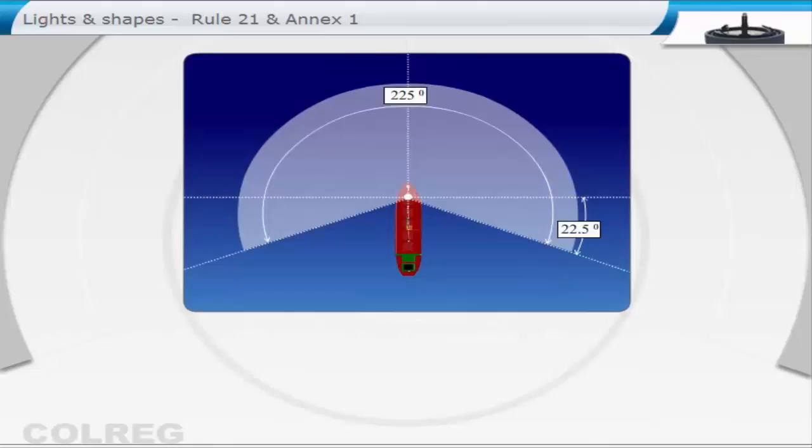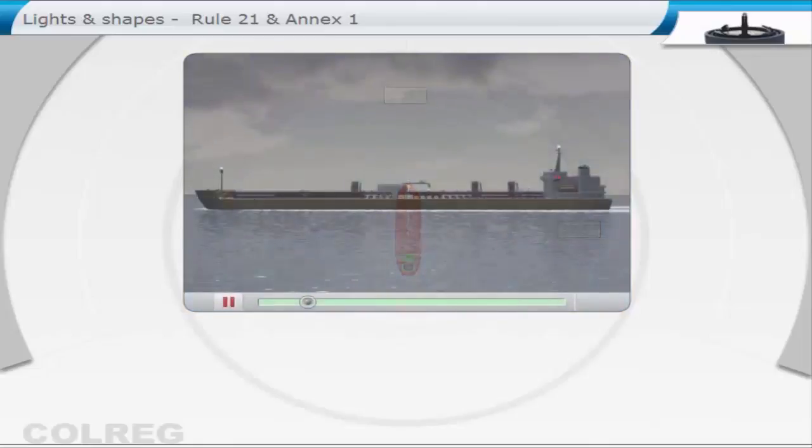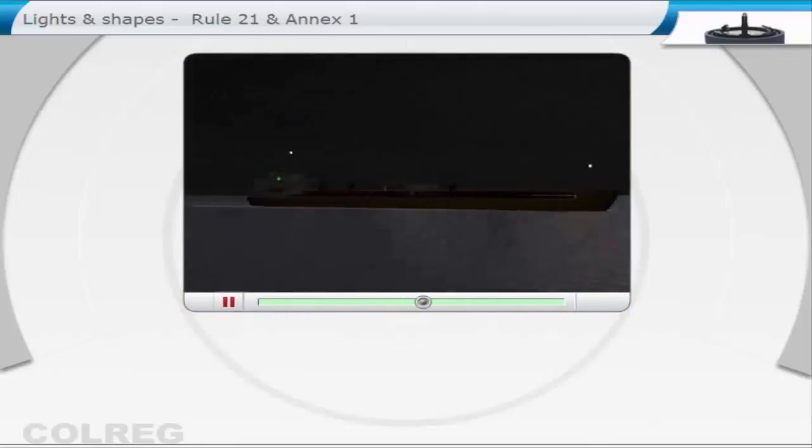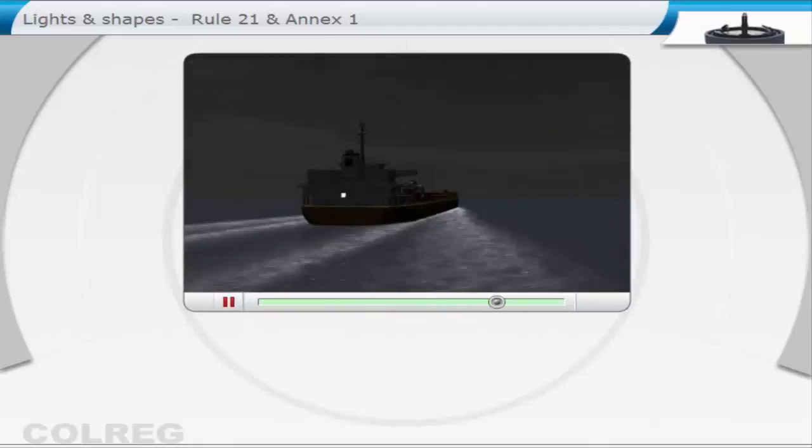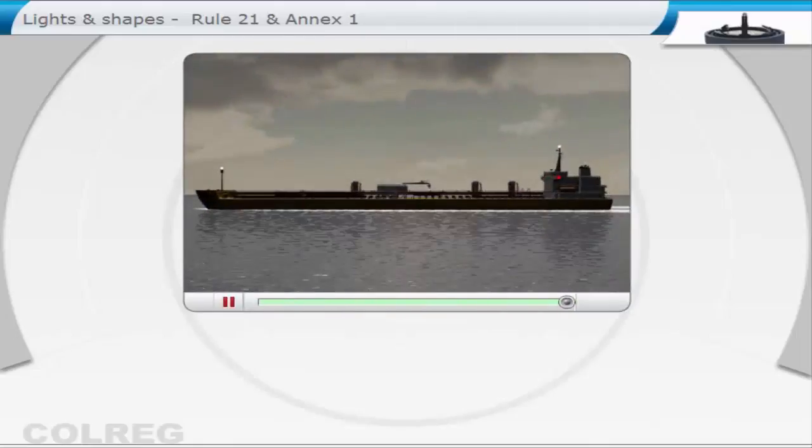That is to 22.5 degrees above the beam on each side. When a vessel has to show masthead lights on two masts, the foremast light should be seen lower than the aftermast light.